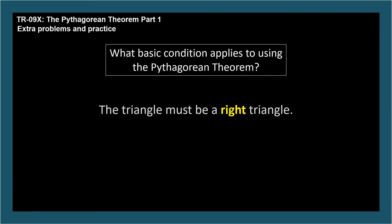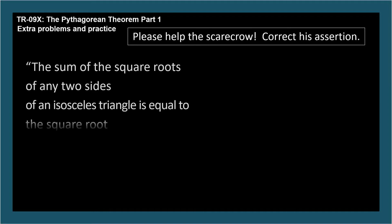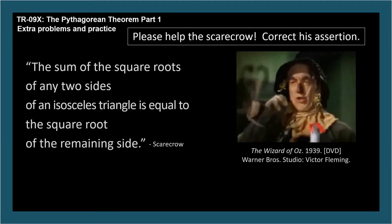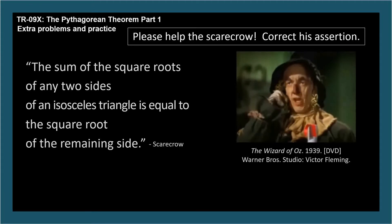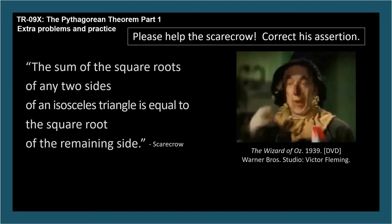In the movie The Wizard of Oz, after the scarecrow gets his brain, he spews out what is apparently supposed to be the Pythagorean theorem, but not quite: 'The sum of the square roots of any two sides of an isosceles triangle is equal to the square root of the remaining side.' Wow, so wrong. Each of these lines of text contains an error — please pause and correct the underlined phrases.